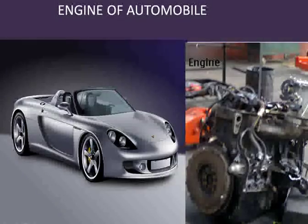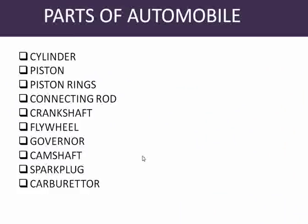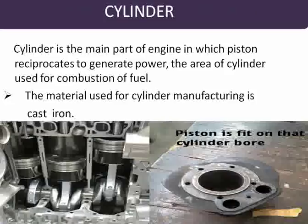Hello guys, my name is Rahul. Today I am talking about the engine of the automobile. We are talking about the main parts of the automobile engine. The important parts include: cylinder, piston, piston rings, connecting rod, crankshaft, flywheel, governor, camshaft, spark plug, and the carburetor.